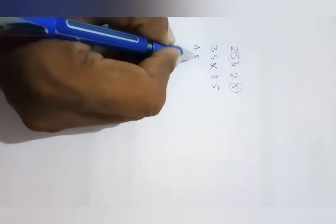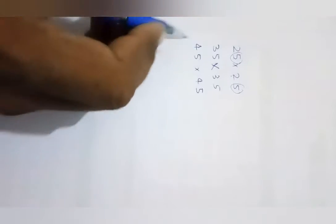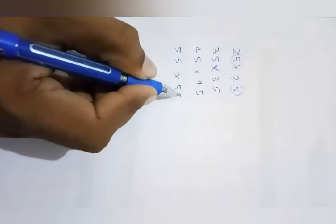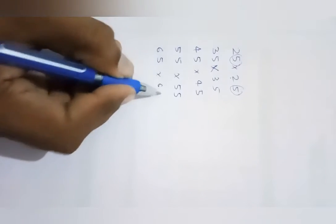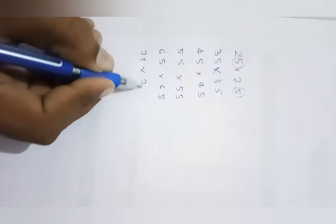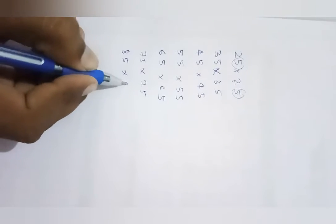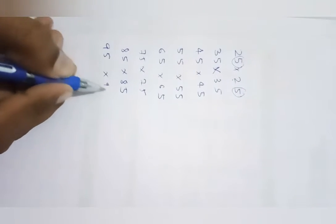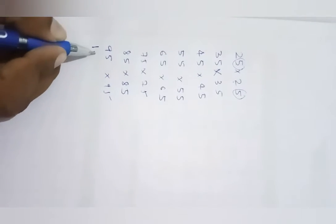The condition is like this: suppose you have 25 into 25 — the last digit should be 5 and the tens digit should be the same. Then 35 into 35, 45 into 45, 55 into 55, 65 into 65, 75 into 75, 85 into 85, 95 into 95, and you can also write 105 into 105.